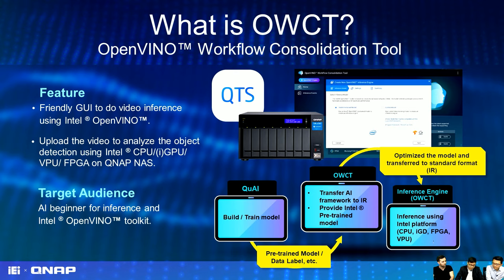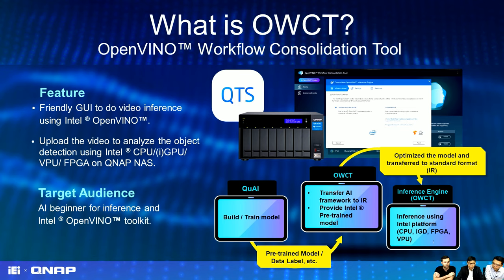Intel also provides pre-trained models inside OpenVINO, so you don't need to train any model. You can use their IR format and sample code to do inference on our NAS right away. We think our OpenVINO workflow consolidation tool can help any AI beginner who wants to try inference. For example, they can use QVR Pro to get surveillance video from home or from the road, then use OpenVINO to accelerate inference performance. Our target audience is AI beginners in the inference field.